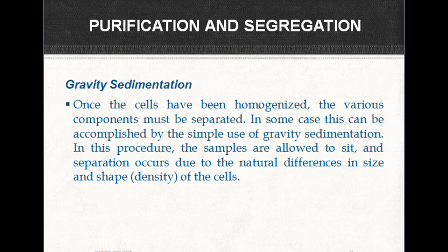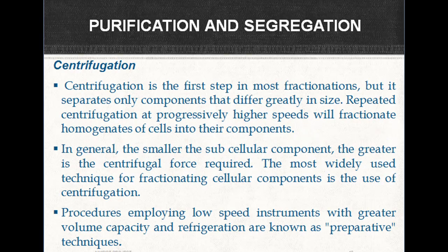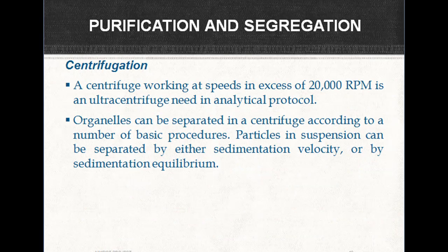Centrifugation is the first step in most fractionation, but it separates only components that differ greatly in size. Repeated centrifugation at progressively higher speeds will fractionate a homogenate of cells into their components. In general, the smaller the subcellular component, the greater the centrifugal force required. A centrifuge working at speeds in excess of 20,000 rpm is an ultracentrifuge, used in analytical protocols.